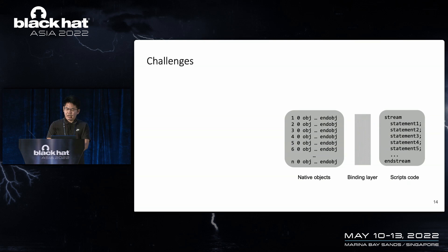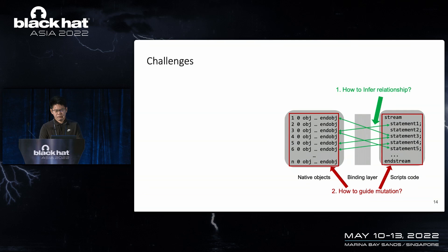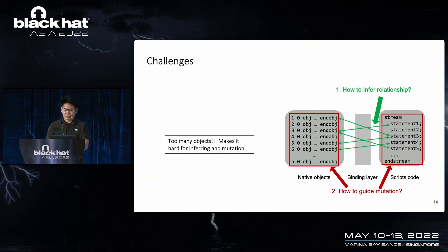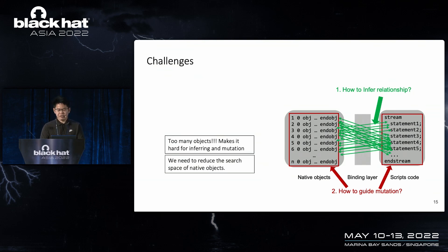Our method is novel, but there are several challenges to solve. The first challenge is how to infer the relationship between native objects and script code. Once we have the relationship, the second challenge is how to use it to guide mutation. However, when we try to solve these two challenges, we encounter a new problem: there are so many native objects that the search space for relationship inference becomes huge and guided mutation is not feasible. To solve this, we need to reduce the search space by categorizing all native objects into different classes according to their semantic features.